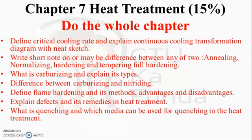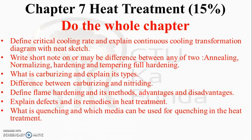Chapter 7 is Heat Treatment, which also contains 15 percent of weightage. Do the whole chapter at least once, as GTU may ask seven marks or up to 14 marks of theory from this chapter. Key questions include: define critical cooling rate and explain the continuous cooling transformation diagram with a neat sketch; write short notes or compare any two of annealing, normalizing, hardening, and tempering; explain full hardening. They may ask differences between annealing and normalizing, or hardening and full hardening, or ask a definition for one or two marks. Also important: what is carburizing and explain its types; difference between carburizing and nitriding.